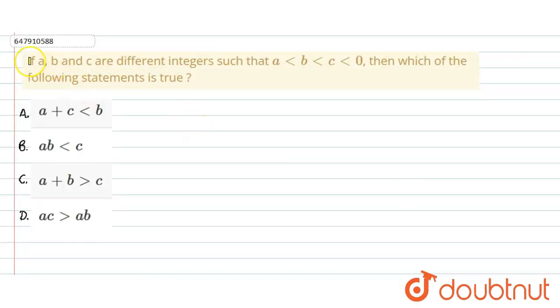Hello students, today we discuss a question. The question says that if A, B and C are different integers such that A less than B less than C less than 0, then which of the following statements is true? Option A: A plus C less than B. Option B: AB less than C. Option C: A plus B greater than C. Option D: AC greater than AB. Here we have three integers, and the condition is A less than B less than C less than 0. It means the ABC integers are less than 0, meaning negative values.